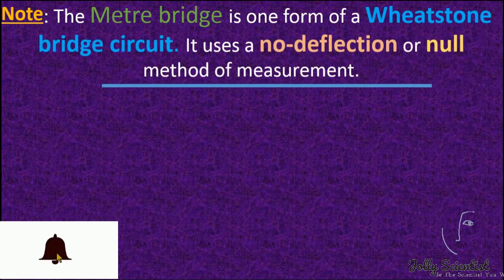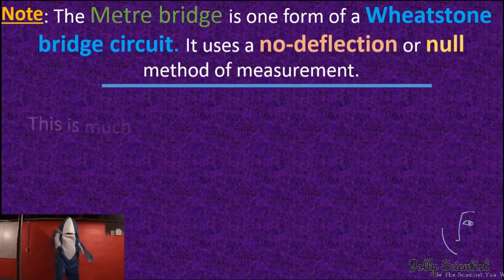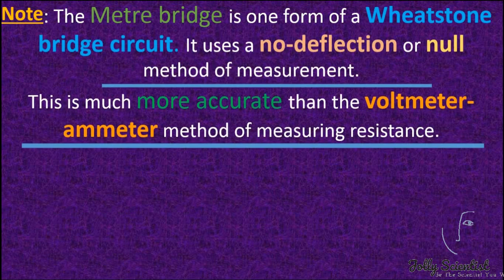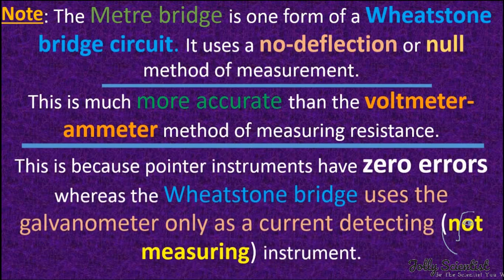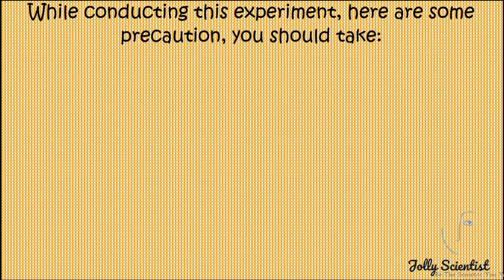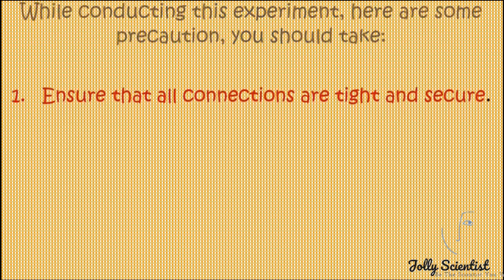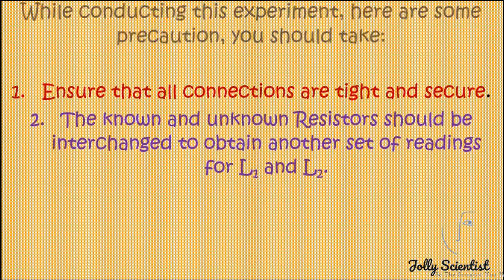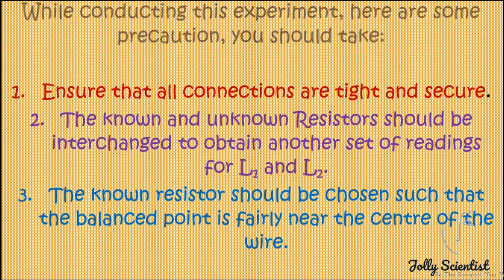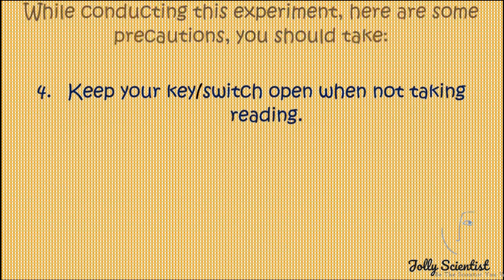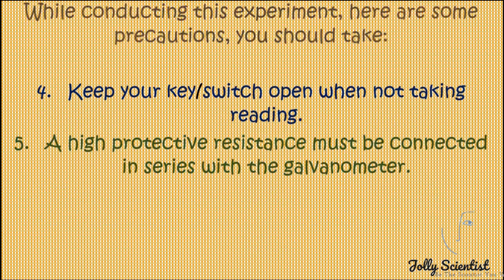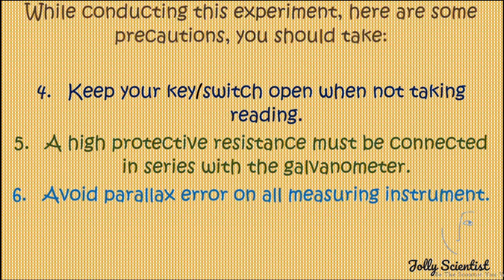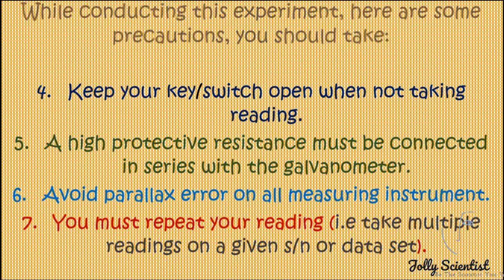The meter bridge is one form of the Wheatstone bridge circuit. It uses a null (no-deflection) method of measurement, which is much more accurate than the voltmeter-ammeter method, because point instruments have zero errors, whereas the Wheatstone bridge uses the galvanometer only as a current-detecting instrument, not a measuring one. Precautions: ensure all connections are tight; interchange known and unknown resistances for another set of readings; choose the known resistor so the balance point is near the center; keep the key open when not taking readings; connect a high protective resistance in series with the galvanometer; avoid parallax error; and repeat readings.